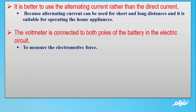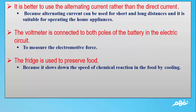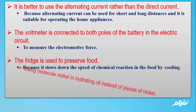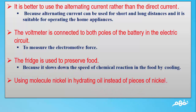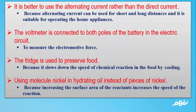Number 3: The fridge is used to preserve food. The answer: Because it slows down the speed of chemical reaction in the food by cooling. Number 4: Using molecule nickel in hydrating oil instead of pieces of nickel. The answer: Because increasing the surface area of the reactants increases the speed of the reaction.